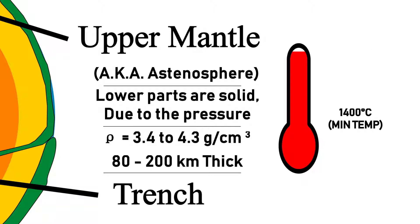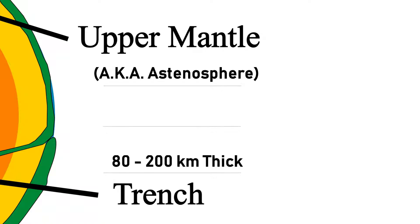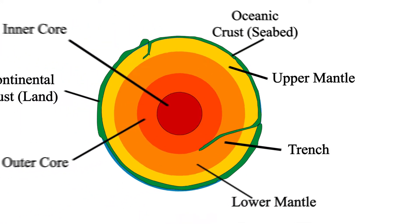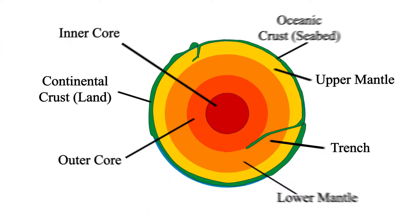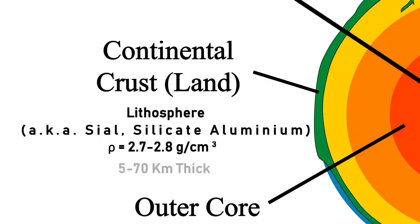Its lower parts are solid because there is so much pressure. Next we'll discuss the crust, which is also called the lithosphere. The first one is the upper part of the lithosphere, called the continental crust, or sial. It has a density of 3.4 to 4.3 grams per cc, and its thickness varies between 5 and 70 kilometers.